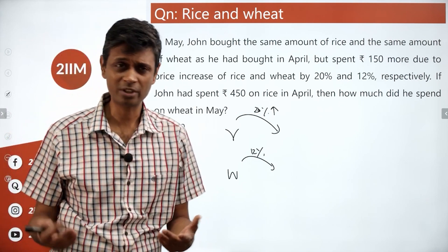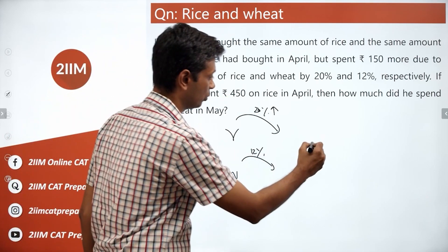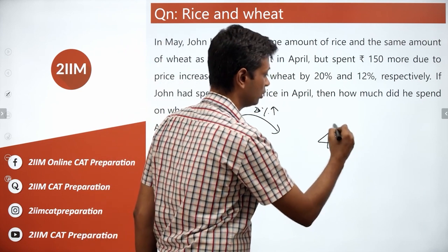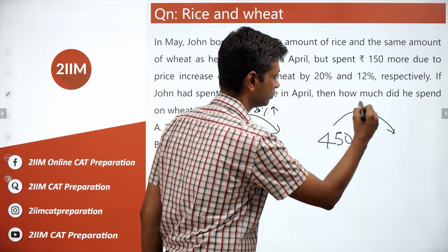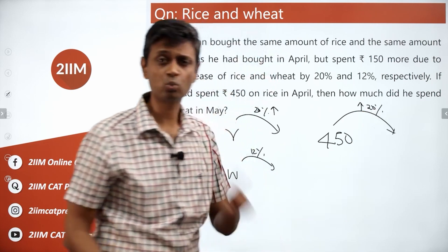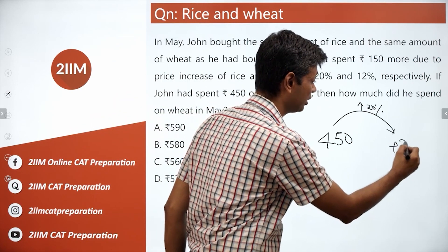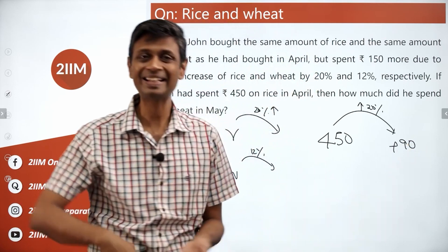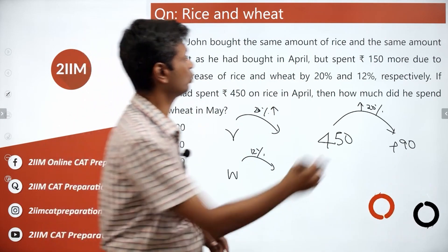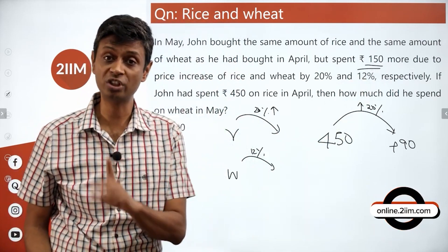Very regular question. He spends 450 on rice in April. This is going to be up 20% because the price of rice is up 20%. 20% is one-fifth, so the additional is 90. The extra he spends on rice is 90. The total extra he spends is 150. Extra he spends on wheat is therefore 60.